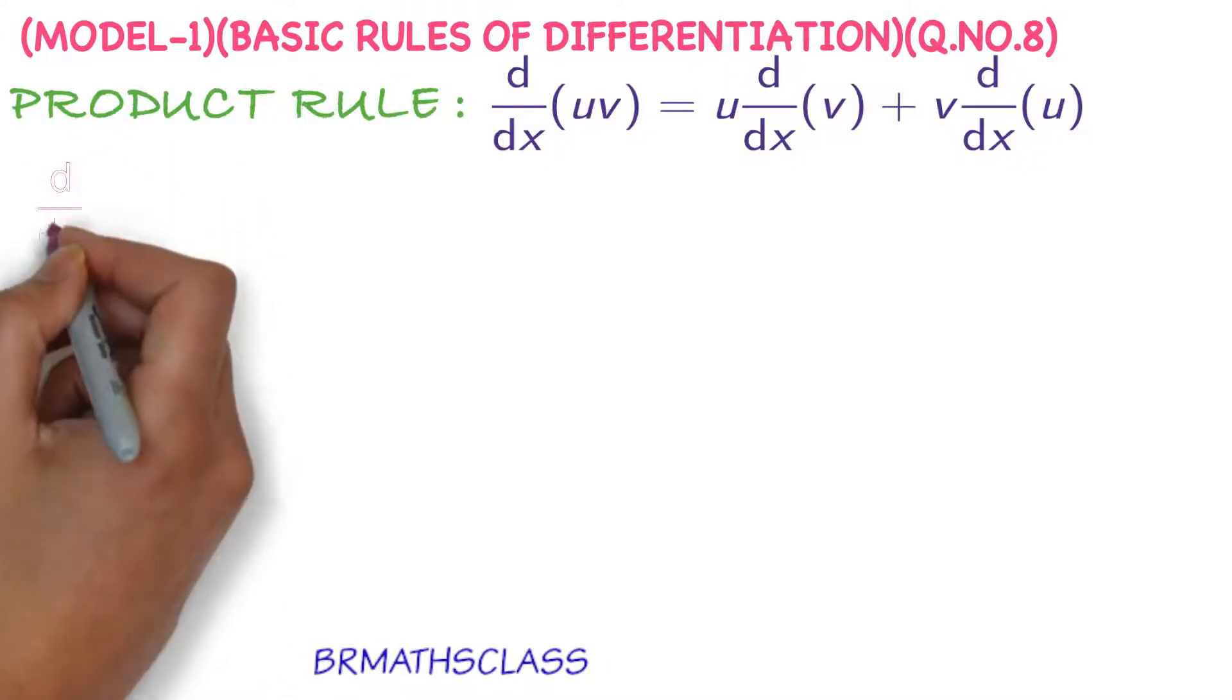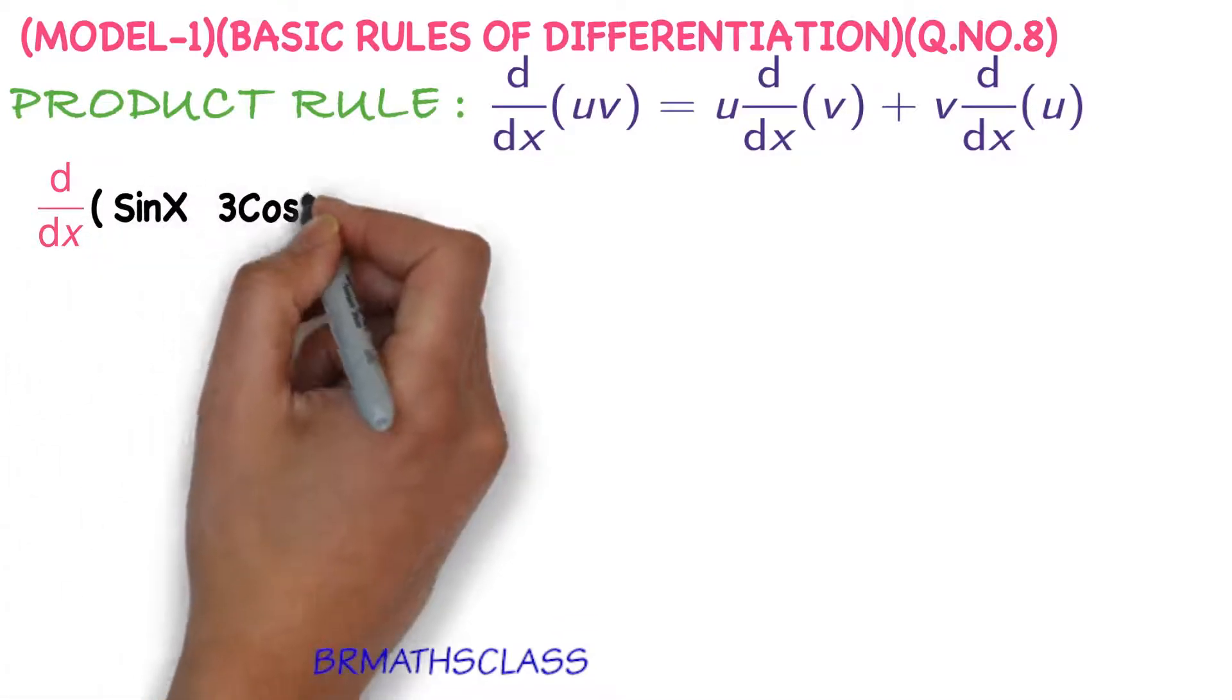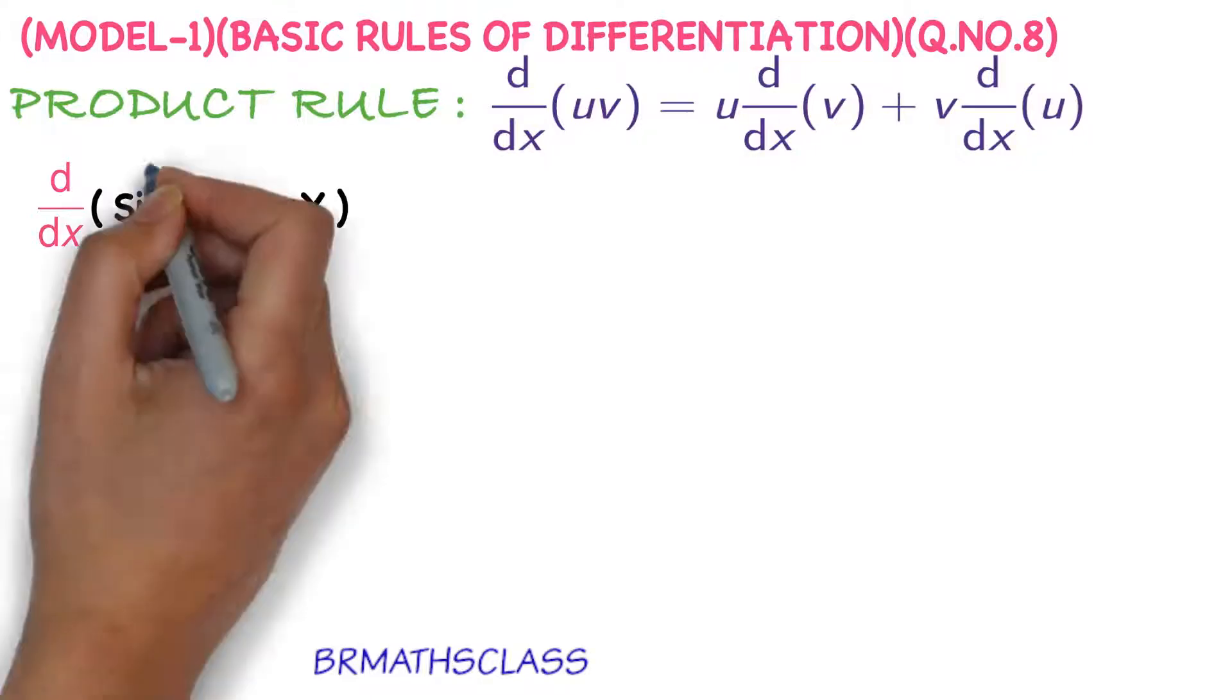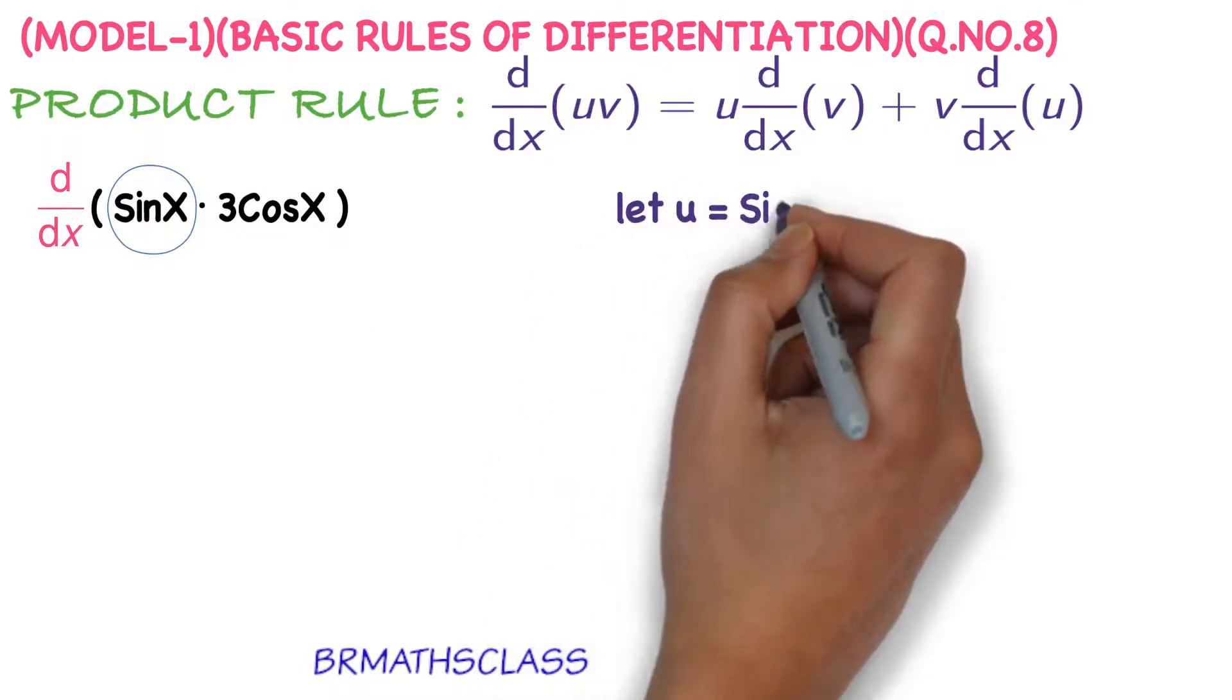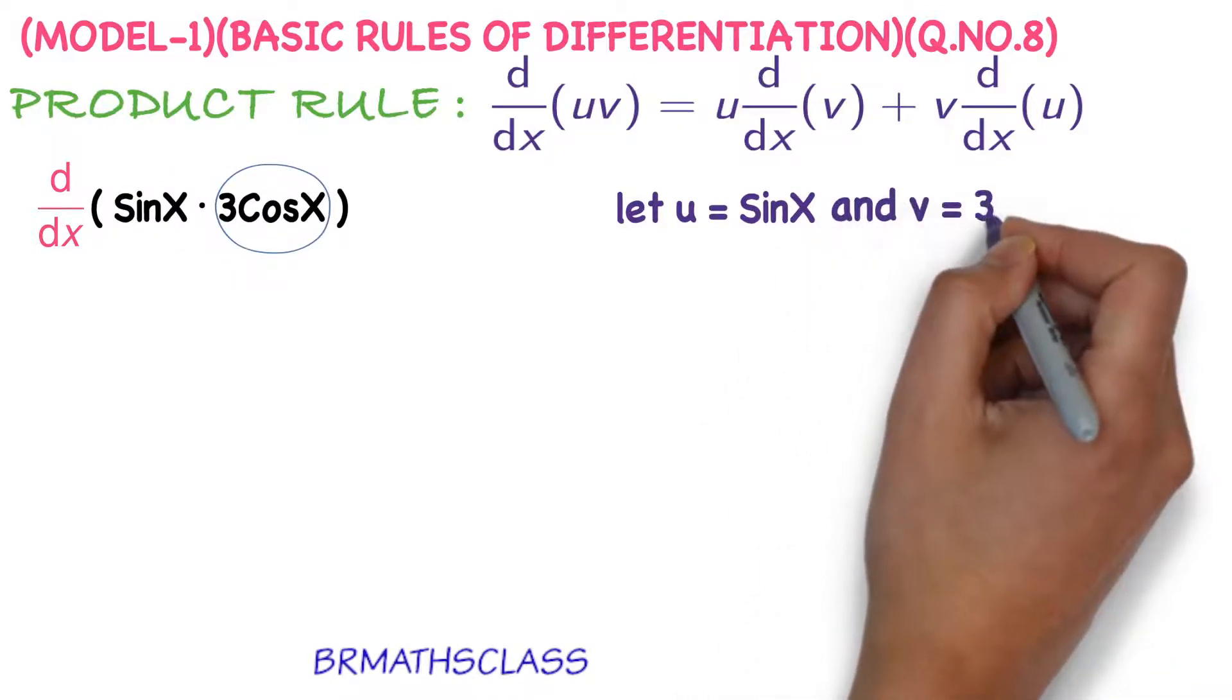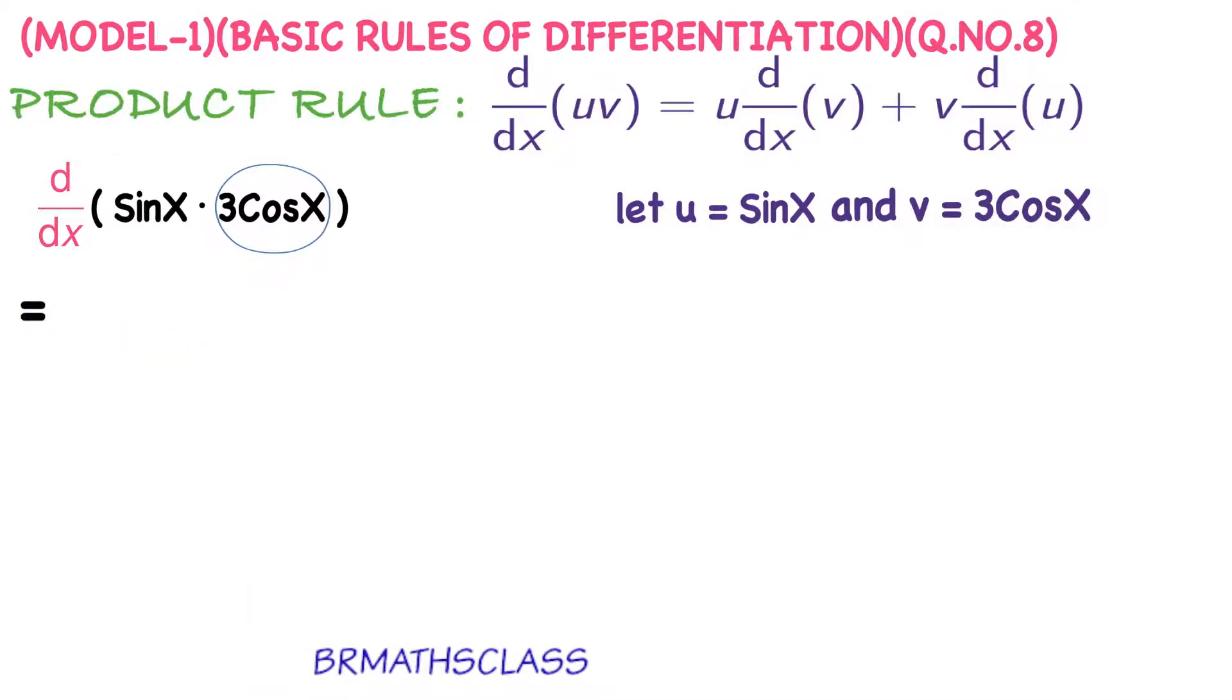Derivative of sin x into 3 cos x. Here you can observe product of two functions. u is sin x, so we take u equals sin x. And what is the other function given? 3 cos x. v equals 3 cos x. Now we will apply derivative of uv formula.